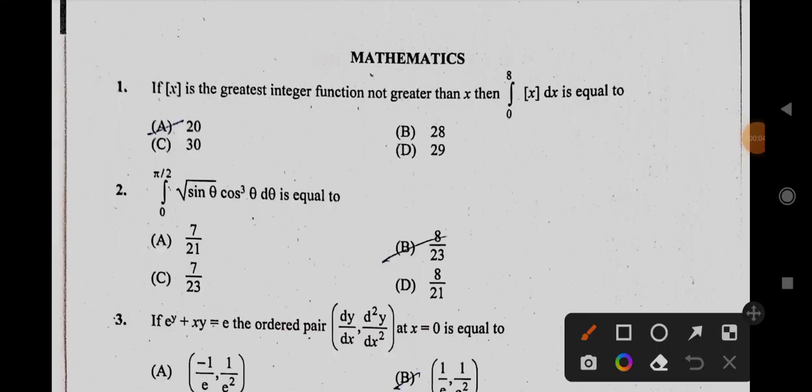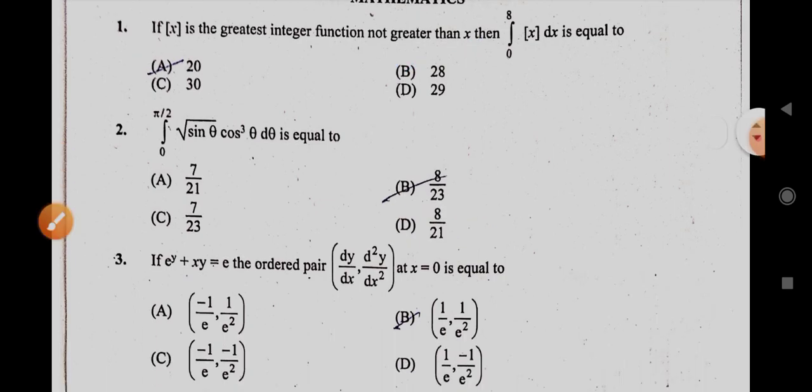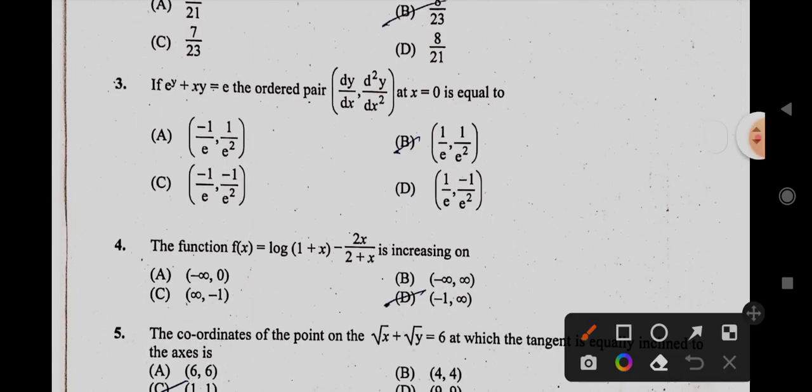First one is B. In the second, it is 8 by 21, D option. And next in third, it is A option.